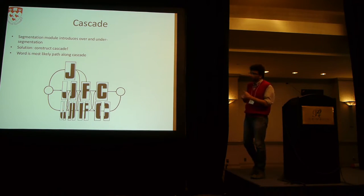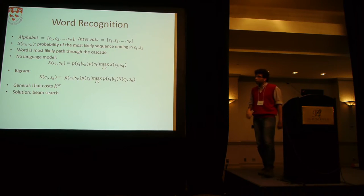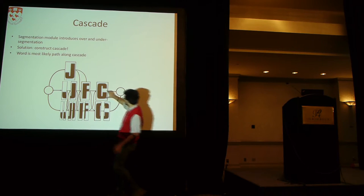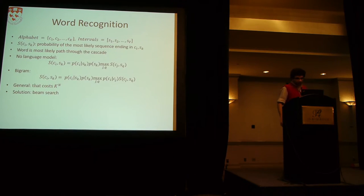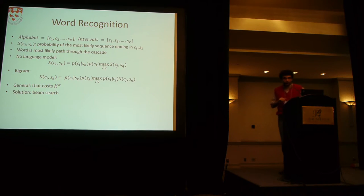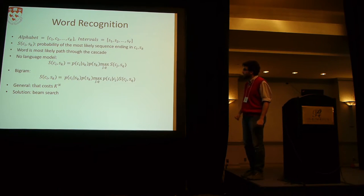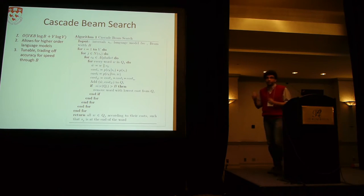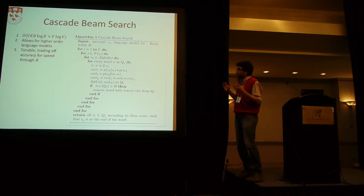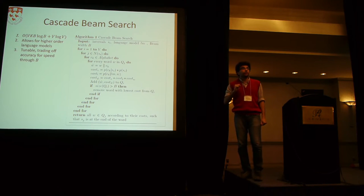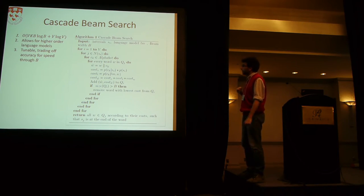This forms an adjacency graph on the word on which we do inference. We have a set of intervals, and we compute the probability of an interval-character pair — a word ending at an interval with a character. Without a bigram language model, we could use a simple dynamic programming approach, but this doesn't scale well for n-gram language models. Our solution is a variant of beam search that does inference in time constant to the size of the lexicon, bounded by the beam width, and allows higher-order language models.